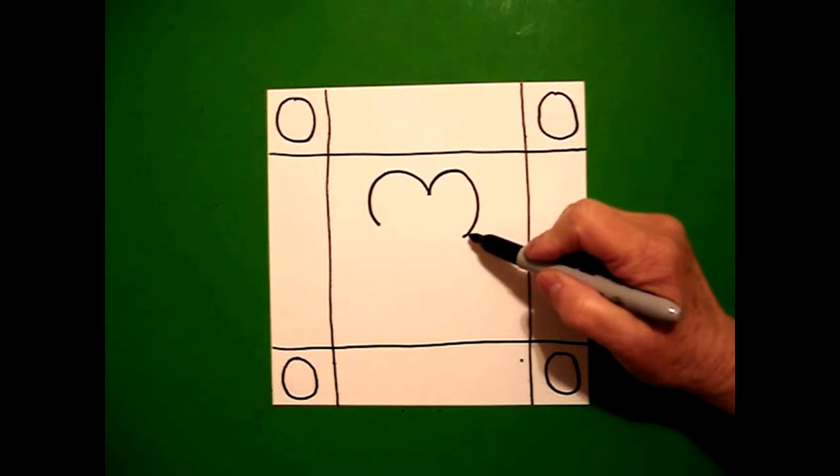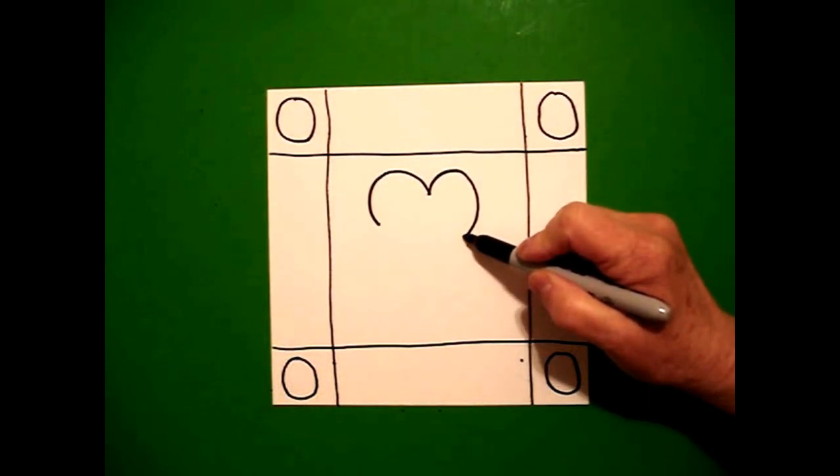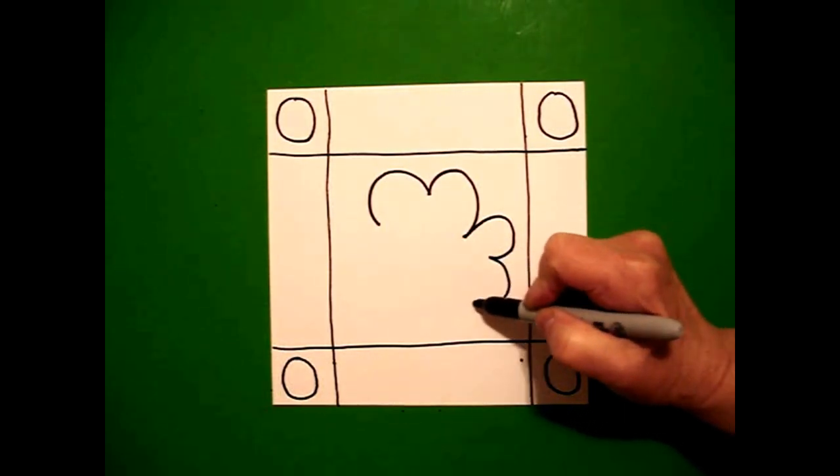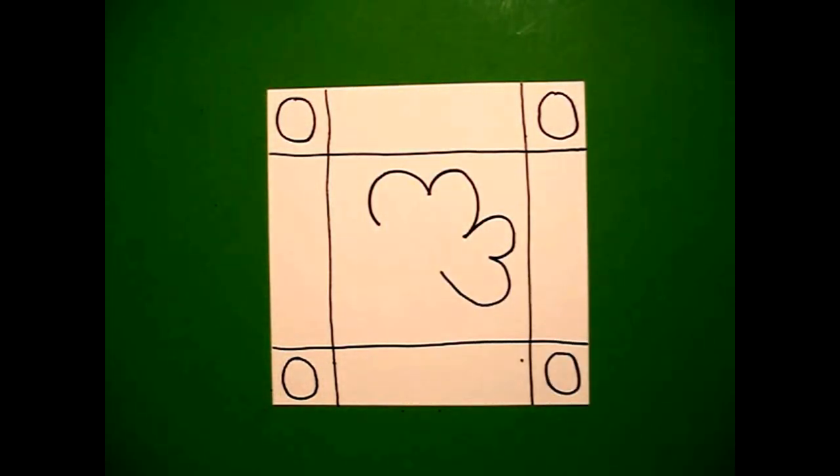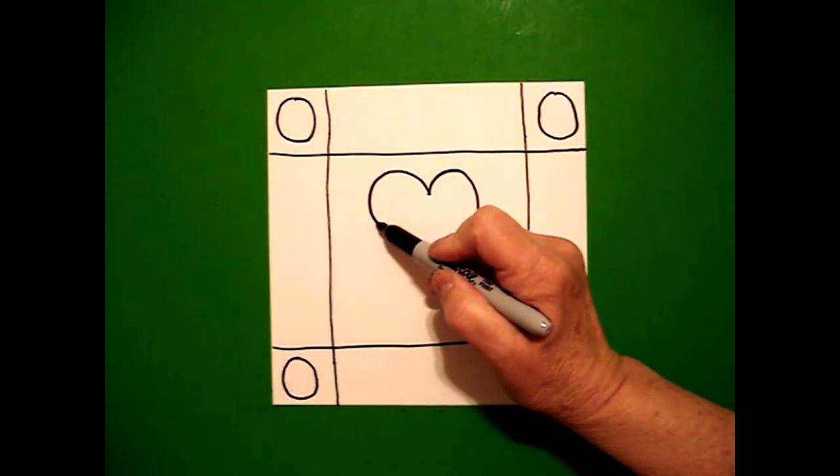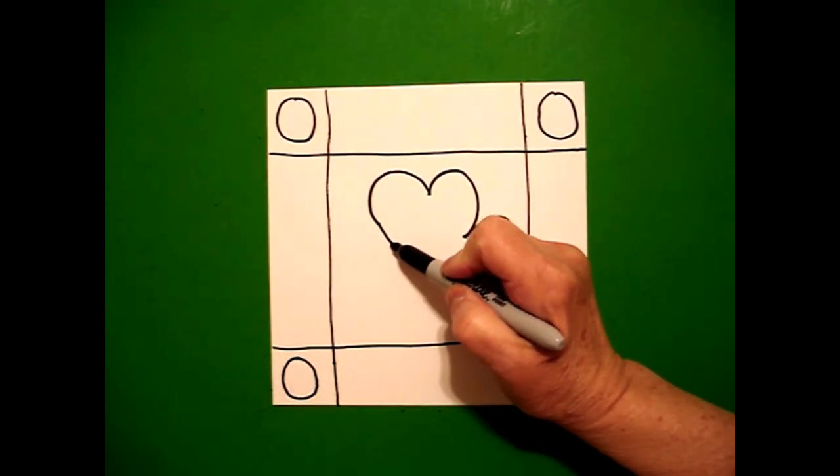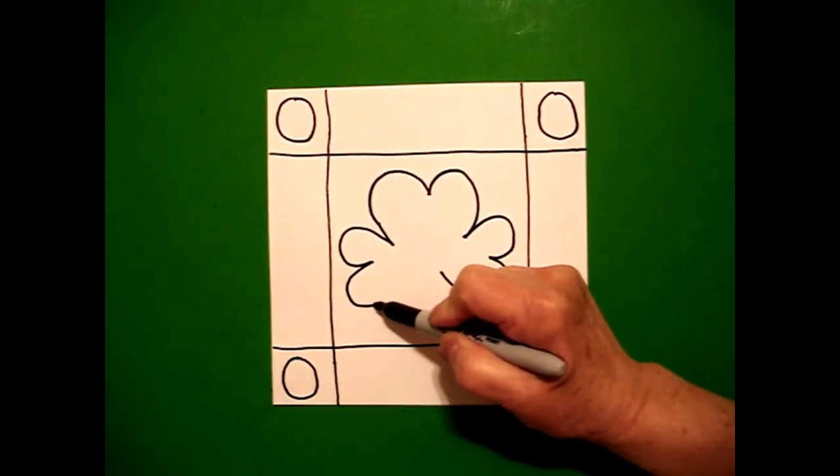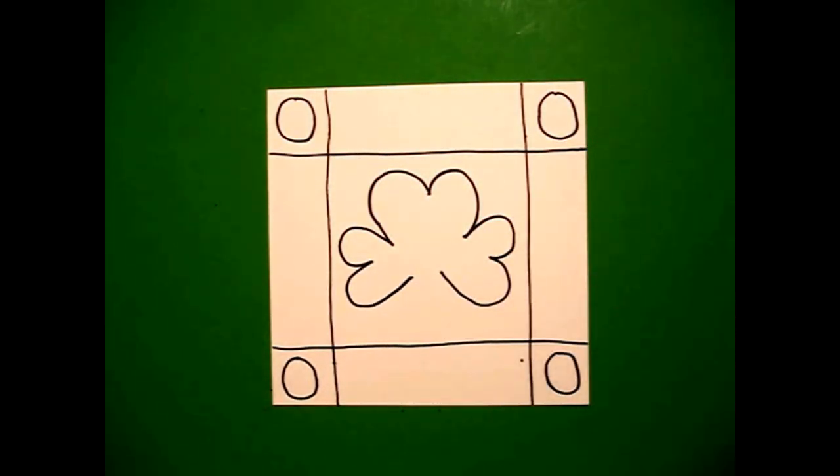I'm going to leave these floating because now on the right hand side, curve line out, in, out, in, and leave that floating. Come over here on the left, bring this down a little bit, curve line out, in, out, in, and leave that floating.